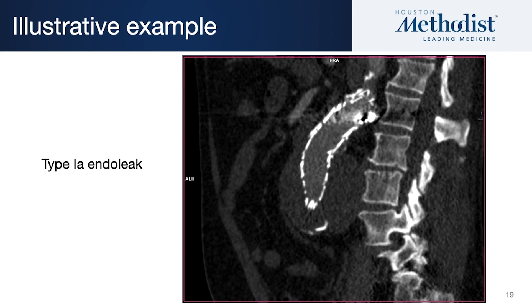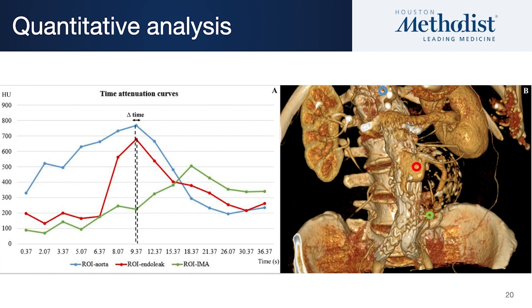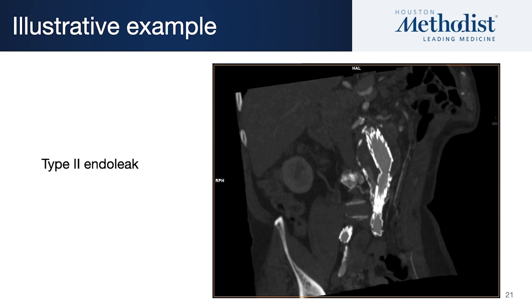Here's a type 1 endoleak, for example. You can see dye arrives in the aorta and dye arrives in the aneurysm sac almost simultaneously — pretty likely it's a type 1 endoleak. You can confirm this by quantitating it. You can see that the red area where the dye was arriving in the aneurysm sac was the same time as it comes down through the endograft. It's confirmed by the anatomical imaging. As a control, you can choose one of the lumbar arteries and you can see the time curves are shifted.